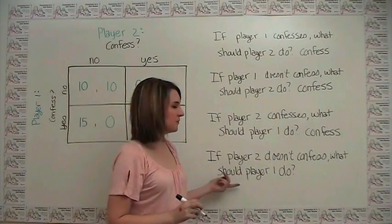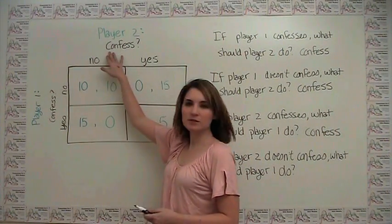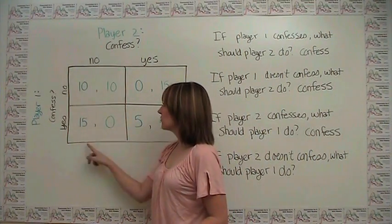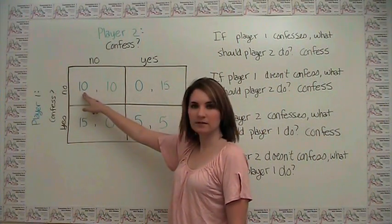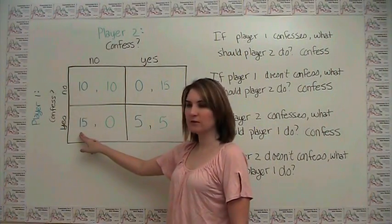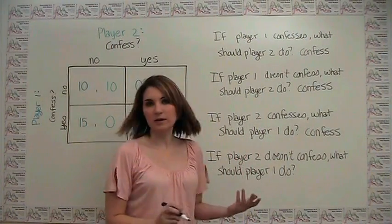Now if player 2 doesn't confess, what should player 1 do? So if player 2 doesn't confess, we're over here on the left somewhere, and player 1 can either get 10 by being quiet, or 15 by ratting out his buddy. Well, 15 is greater than 10, so he's going to want to confess.